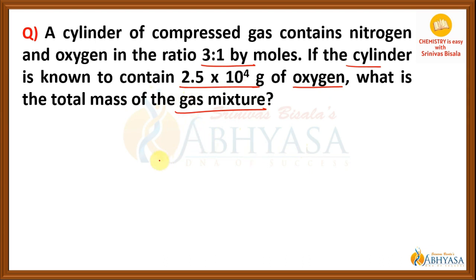Let me explain what is given here. They are given the ratio of nitrogen and oxygen as equal to 3 is to 1. Along with it, the mass of oxygen is also given, which is 2.5 into 10 to the power of 4 grams. And we need to find out the mass of the gaseous mixture.